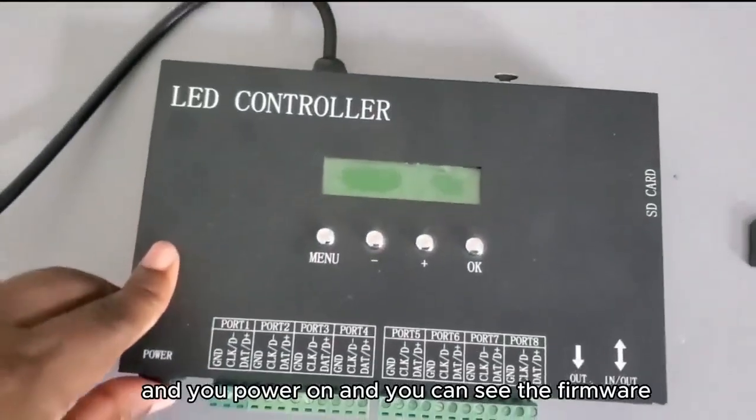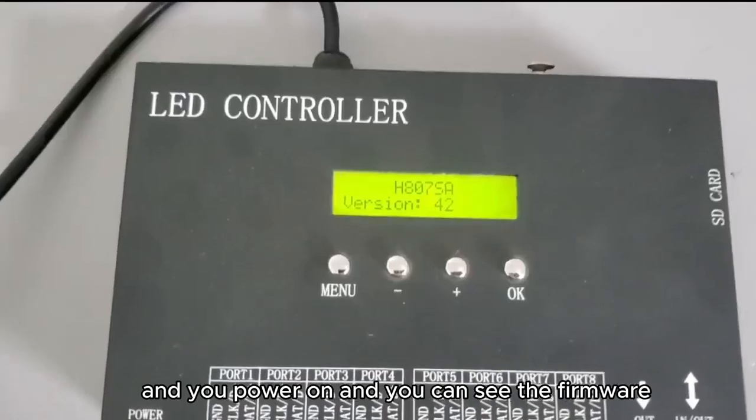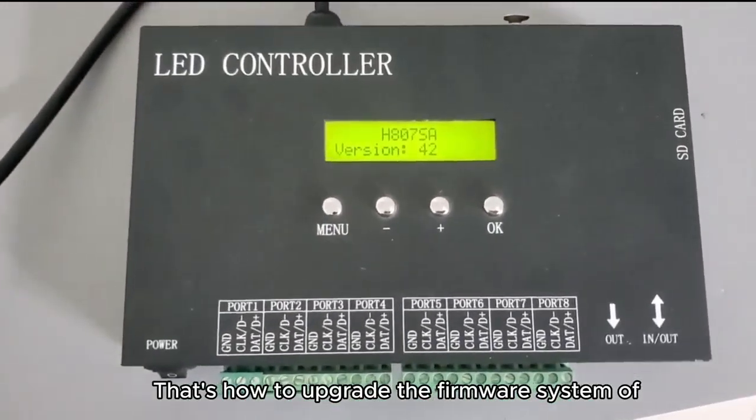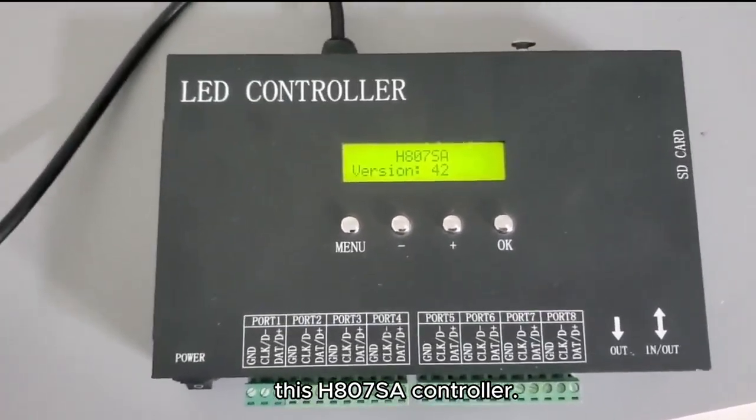Power on again, and you can see the firmware is upgraded. Now you can see we have version 42. That's how to upgrade the firmware system of this H8807 controller.